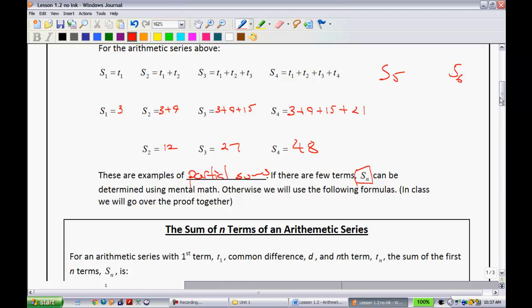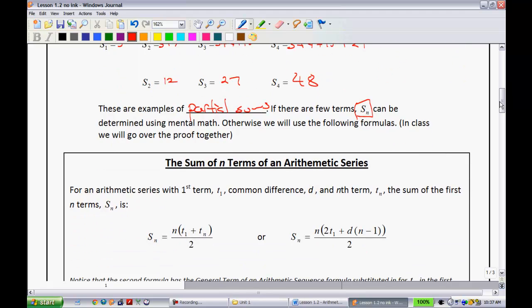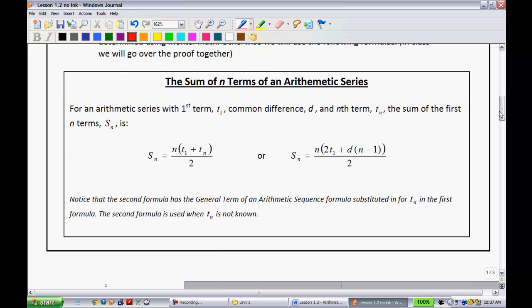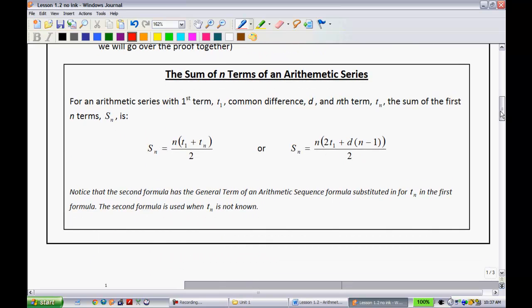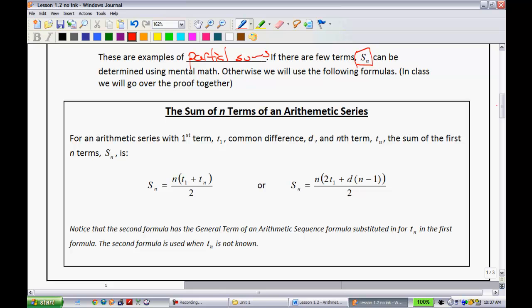So, if there are few terms, Sn can be determined using mental math. We could have kept going like that. I could have found out what the sum of the first five terms is, the sum of the six terms, and so on. That's not the end of the world. But what I'm going to do is I'm going to kick it up a notch on you guys, and I'm going to ask you, like, what's the sum of the first 1,000 terms.